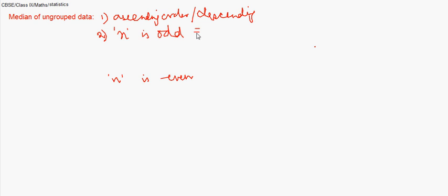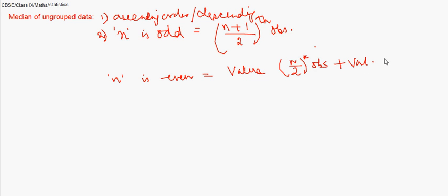If n is even, we calculate it as the value of the (n/2)th observation plus the value of the (n/2 + 1)th observation, divided by 2.